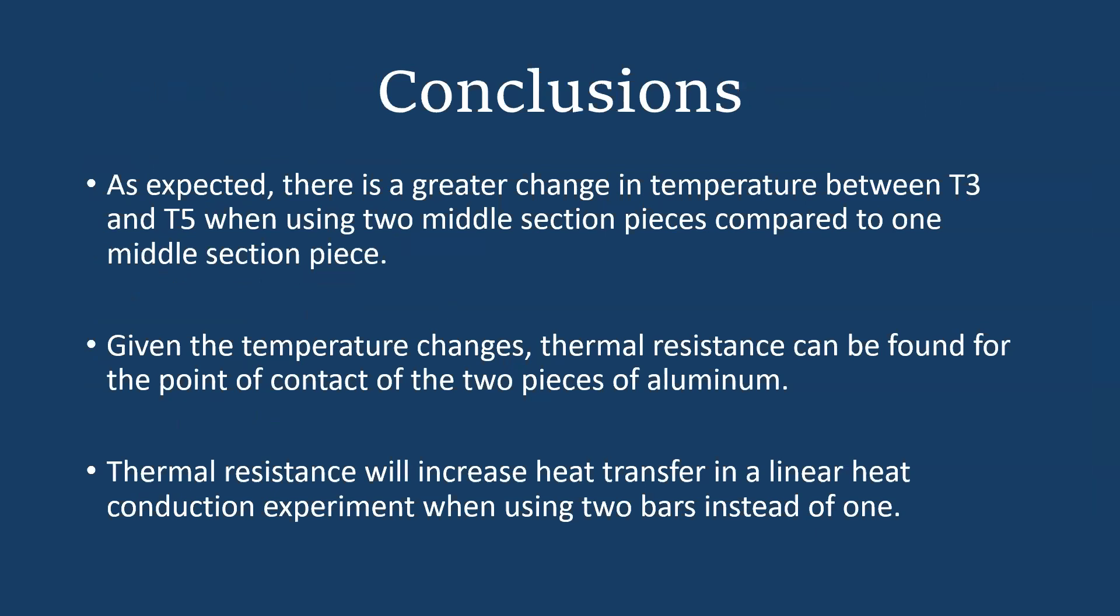In conclusion, we can say that, as we expected, there's a greater change in temperature between T3 and T5 when using two middle section pieces compared to one middle section piece. Given the temperature changes, you can use that to find thermal resistance at the point of contact with the two pieces of aluminum, and we can say that thermal resistance will increase heat transfer in a linear heat conduction experiment when using two bars instead of one.